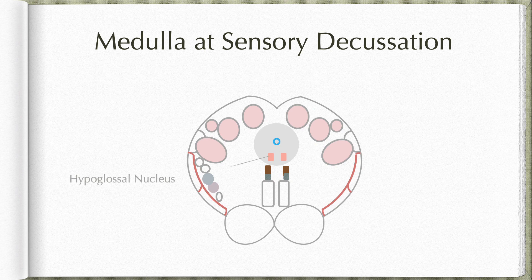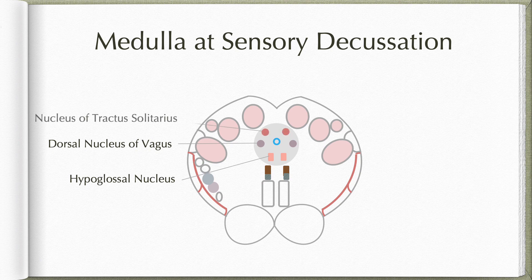Within the central gray matter, we find the beginnings of some cranial nerve nuclei. Anterolateral to the central canal, we find the hypoglossal nucleus. Lateral to the central canal, we find the dorsal nucleus of the vagus. Posterolateral to the central canal, we find the nucleus of tractus solitarius. The hypoglossal nucleus supplies ipsilateral muscles of the tongue and belongs to the somatic efferent column. The dorsal nucleus of the vagus belongs to the general visceral efferent column, supplying preganglionic parasympathetic fibers to the viscera in the neck, thorax, and abdomen. The nucleus of tractus solitarius belongs to both the general visceral afferent and special visceral afferent columns, receiving sensations from the viscera as well as taste sensations.